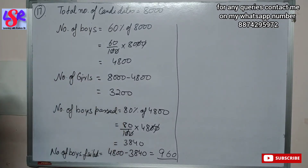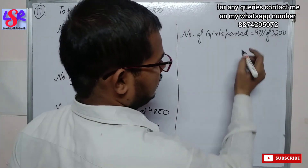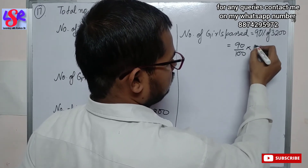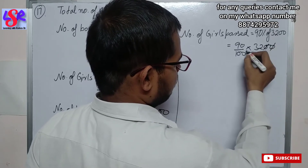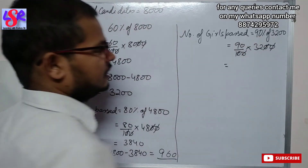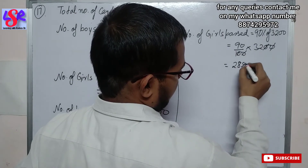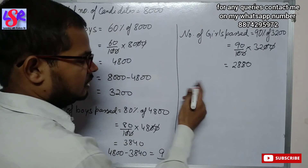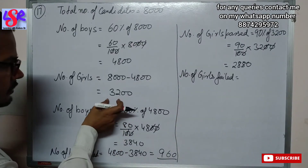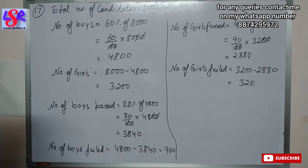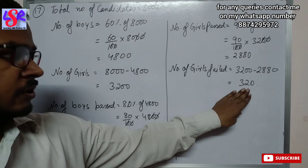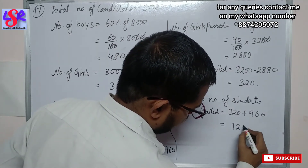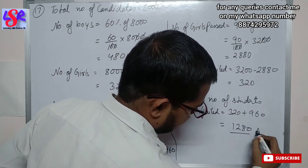Number of girls passed is 90% of total girls. So number of girls passed equals 90% of 3200, that is 90 upon 100 into 3200. Canceling, we get 9 into 320, that is 2880. Number of girls failed equals 3200 minus 2880, that is 320. Total number of students failed equals 320 plus 960, that is 1280 as the answer.